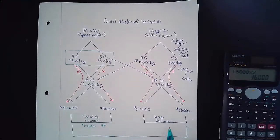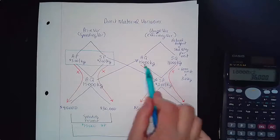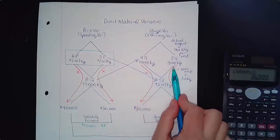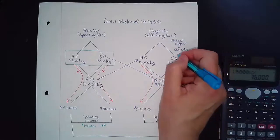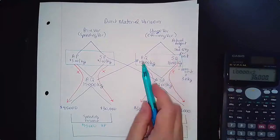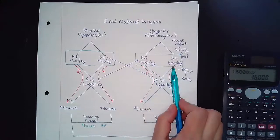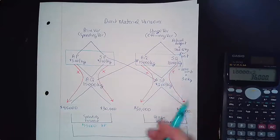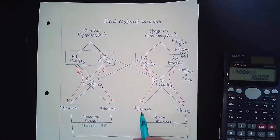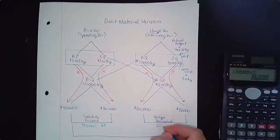For the usage variance, we look at what we used to produce the actual units versus what our standards said we should have used. Looking inside the usage diamond: actual quantity was 15,000 kg, but we thought we would use 18,000 kg. Using less than expected is good for the company — it's favorable. The usage variance, also called the efficiency variance, is $36,000 − $30,000 = $6,000 favorable.